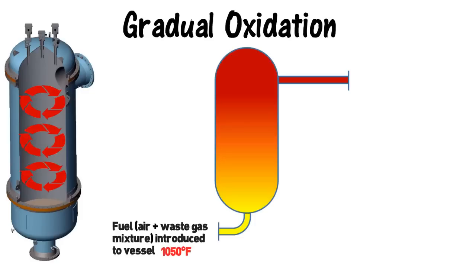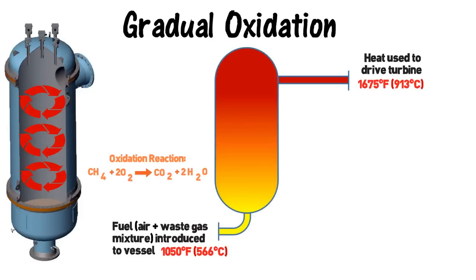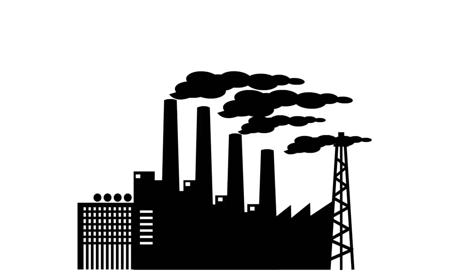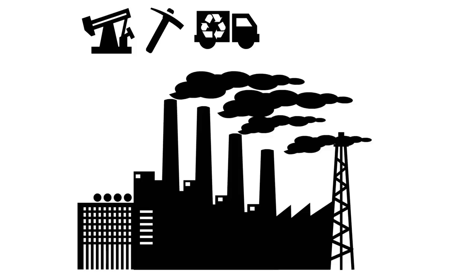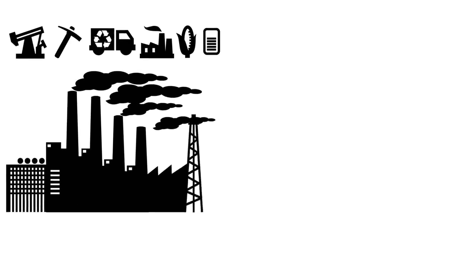Enercor controls the gradual oxidation reaction utilizing a pressure vessel called the gradual oxidizer. Low-quality gases from various industrial sources such as oil and gas, mining, waste, steel production, food, and paper can be sent into Enercor's gradual oxidizer vessel.